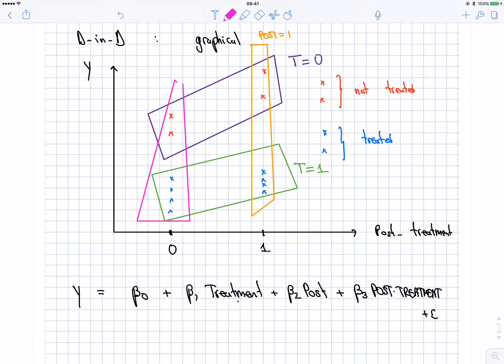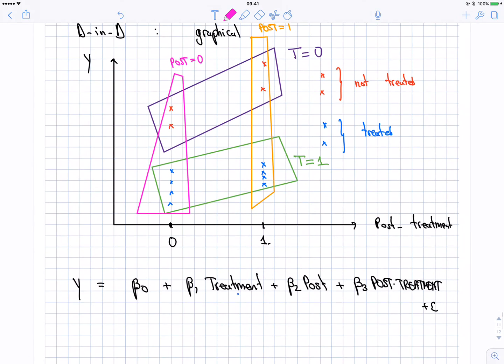I could do a similar thing here. And I could say that this is simply where post is equal to zero. How many dissection do I have of that? Four dissection, four subgroups. I should be able to talk about all those four subgroups. What's the identifying assumption in the model? The identifying assumption is this.